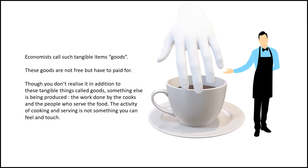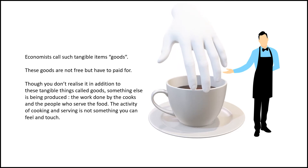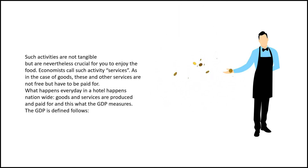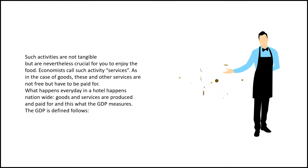When we go to a hotel, most of the time we also have a service. Services are intangible — you cannot touch them, but you can feel them. For example, the way the waiter serves you. So we have two things: one is tangible — that's Goods; another is intangible, how you feel — that is Services. Together, we call them Goods and Services.